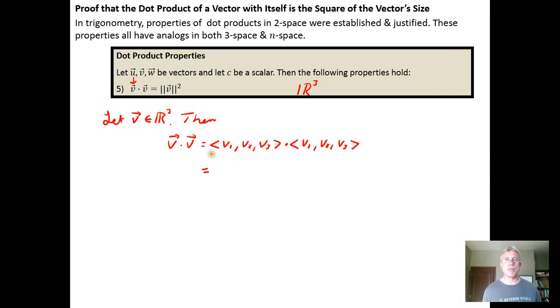Now you just apply the definition of the dot product, which says take the sum of the products of corresponding elements. So I get V sub 1 times V sub 1 plus V sub 2 times V sub 2 plus V sub 3 times V sub 3. These are real numbers, so this is really just V sub 1 squared plus V sub 2 squared plus V sub 3 squared.